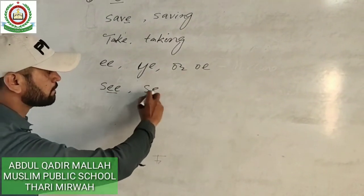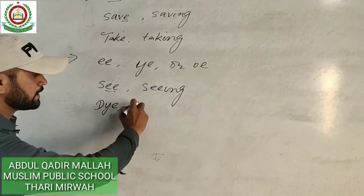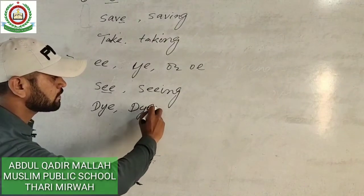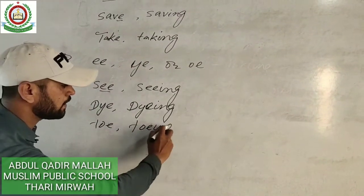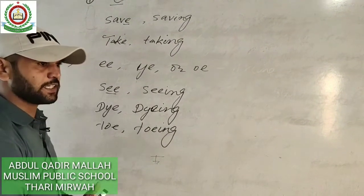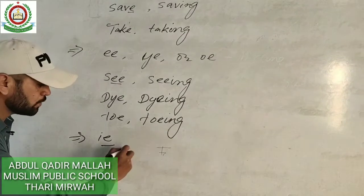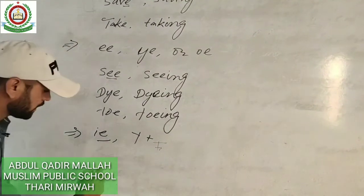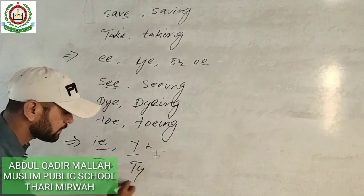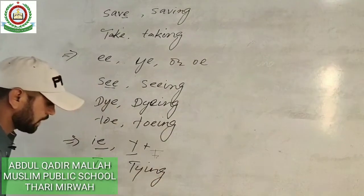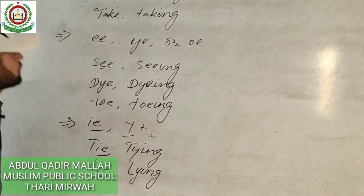For words ending in double 'e,' we directly add -ing. For example, 'see' ends with double 'e,' so we directly add -ing to get 'seeing.' There is another exception: if a word ends with 'ie,' we remove the 'ie,' change it to 'y,' and then add -ing. For example, 'tie' — remove 'ie,' add 'y,' then add -ing — becomes 'tying.'